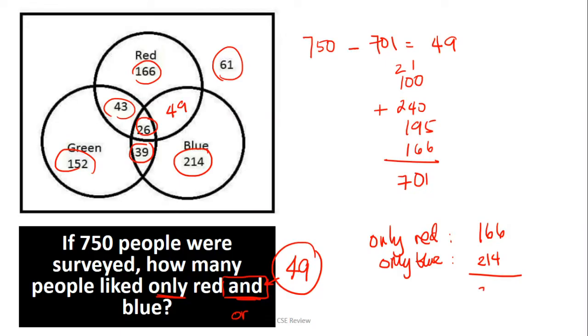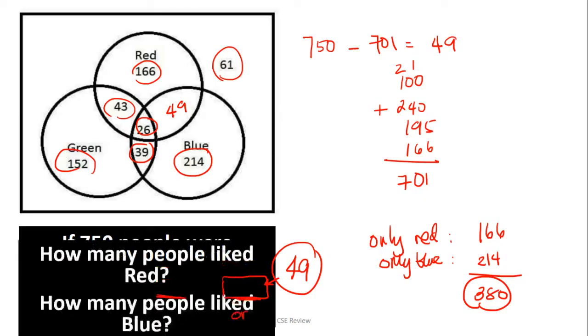Why is only blue 214? Because 49 is an intersection with two preferences, 26 has three preferences, 39 has two preferences. If we're only looking for blue, it's 214. So people who like only red or blue, the answer would be 166 plus 214, which is 380.